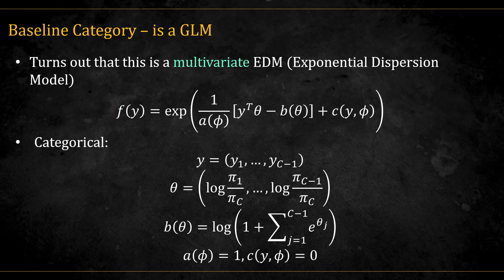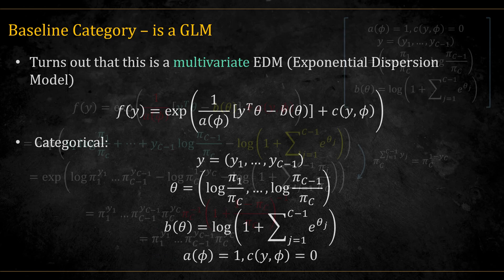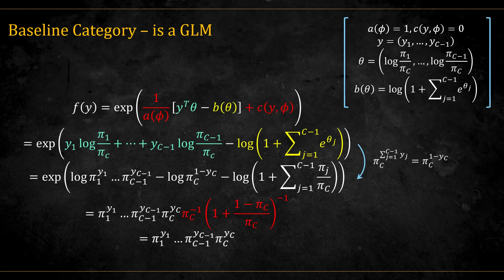For a categorical distribution, y will be a vector of C-1 y's, and theta is the corresponding vector. b(theta), the log normalizer, is equal to the function shown here. a(phi) is equal to 1, and c(y, phi) is equal to 0. Putting all of this together, we get the desired categorical distribution. The 1/a and the c terms cancel out. y dotted with theta gives one term and b(theta) gives another. Using laws of logarithms, and remembering that the sum of the C-1 y's equals 1 minus y_c, we get the resulting expression. Taking the exponent, and noting that the sum of the pi_j's equals 1 minus pi_c, these cancel out and we recover the categorical distribution.